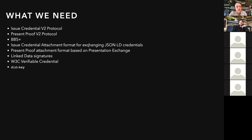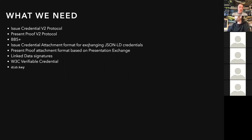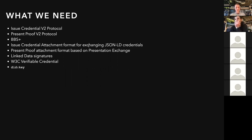There's quite a lot that needs to happen to be able to move to W3C credentials. We need a new iteration of the credential protocols — the V1 protocols were somewhat Indy-focused. By using the newer protocols, which are transport- and credential-format-agnostic, we can use Indy credentials but also any other credential format. We need BBS Plus support in ACA-Py and Python, and we need to be able to exchange JSON-LD credentials and negotiate proofs or presentations.